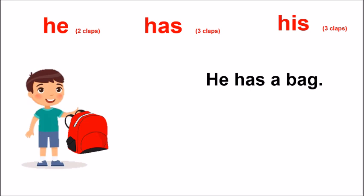So, children, you can see that the boy has a bag. Now, tell me, what is the color of his bag? His bag is red. Read the sentence. His bag is red.